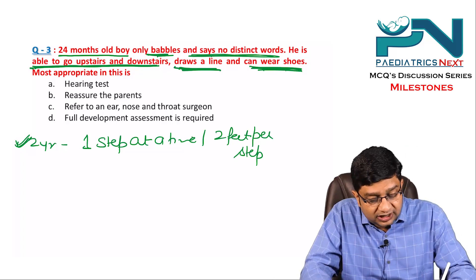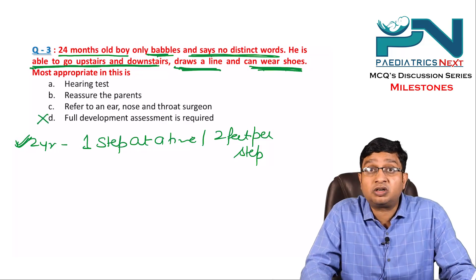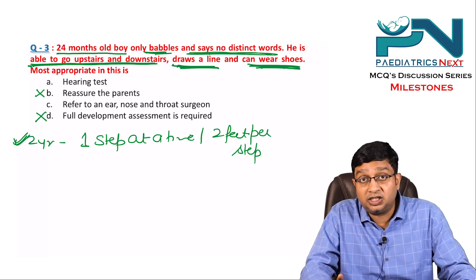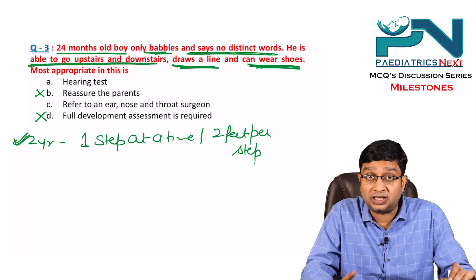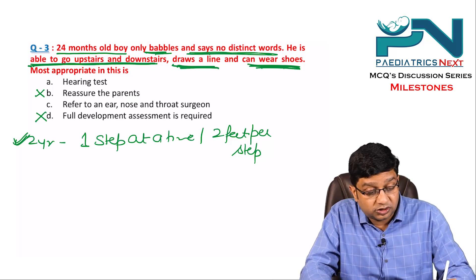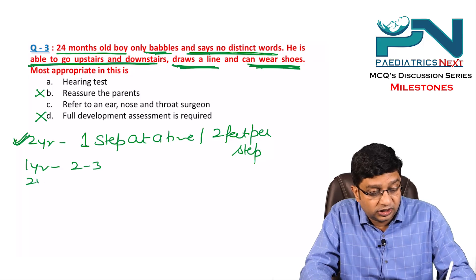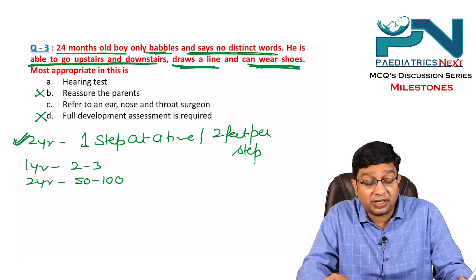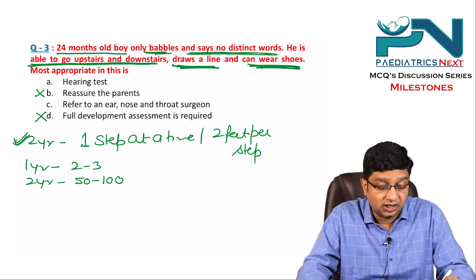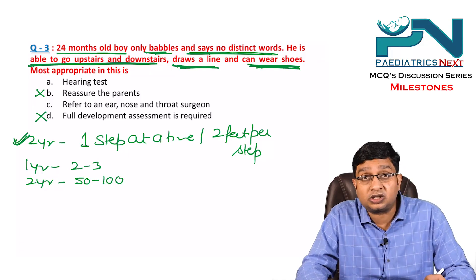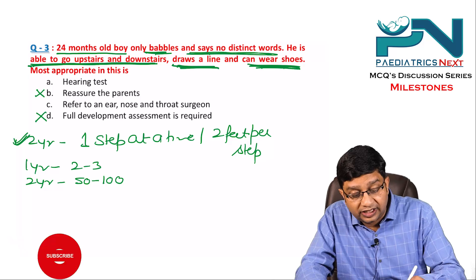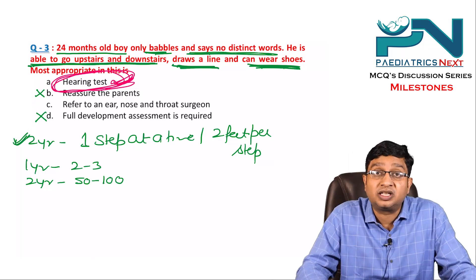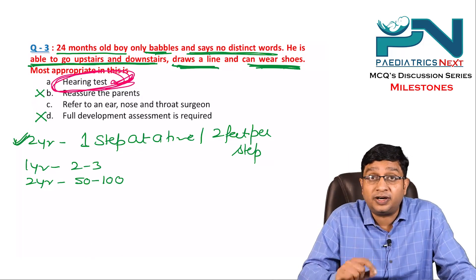Full developmental assessment is not required, and reassurance is not appropriate either, because a two-year-old child should speak 50 to 100 words — one year children speak two to three words, two-year-olds speak 50 to 100 words. The language part is lacking. Between a hearing test and referring to an ENT surgeon, you should always advise the hearing test first when speech is not developed.